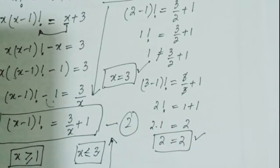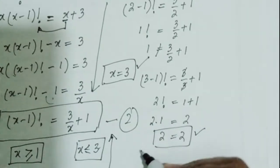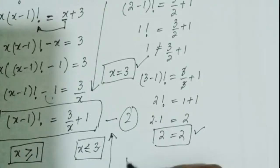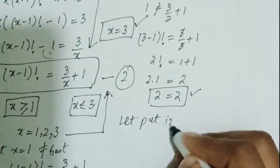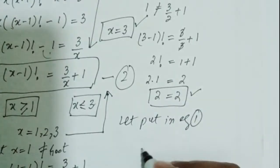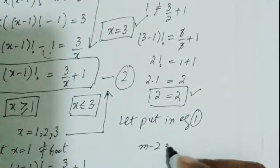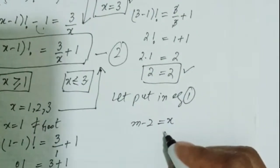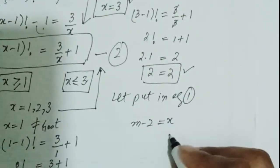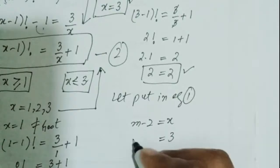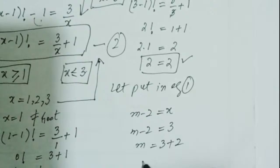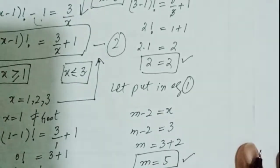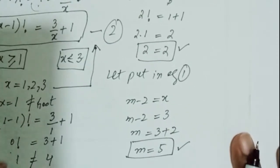Now let's substitute x equals 3 back into equation number 1, which is m minus 2 equals x. Since x equals 3, we get m minus 2 equals 3, so m equals 3 plus 2, and m equals 5. We conclude that m equals 5.